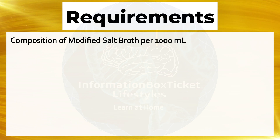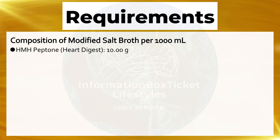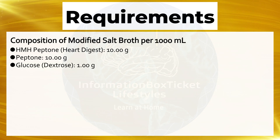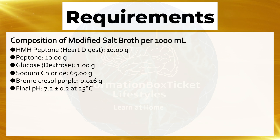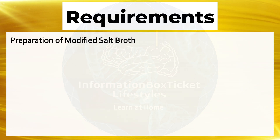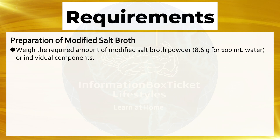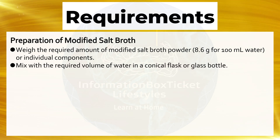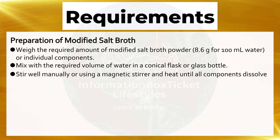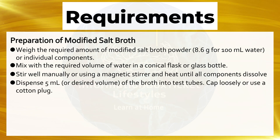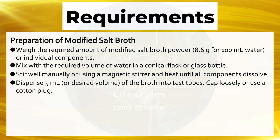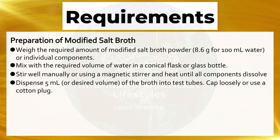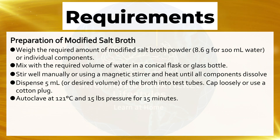Composition of modified salt broth per 1,000 mL: HM peptone heart digest 10g, peptone 2g, glucose (dextrose) 1g, sodium chloride 65g, bromocresol purple 0.016g, final pH 7.2 ± 0.2 at 25°C. Preparation: Weigh 8.6g of modified salt broth powder per 100 mL water, mix in a conical flask, stir and heat until dissolved. Dispense 5 mL into test tubes, cap loosely or use cotton plugs, then autoclave at 121°C and 15 pounds pressure for 15 minutes.